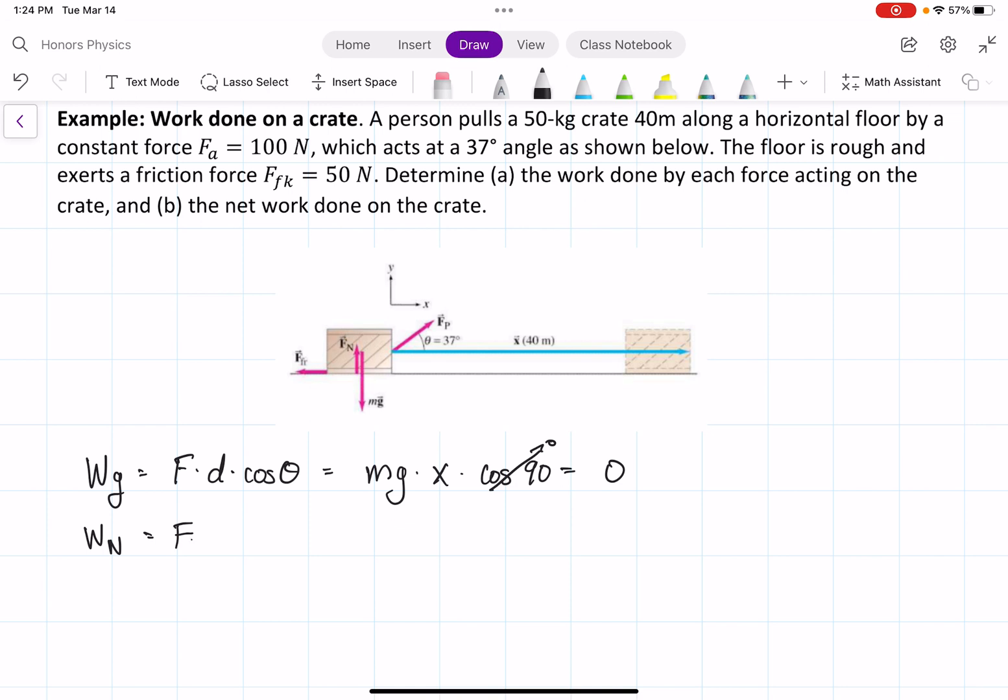So we have F_N times d times cosine 90 again, and we're going to see that it also equals 0.